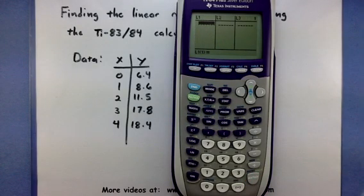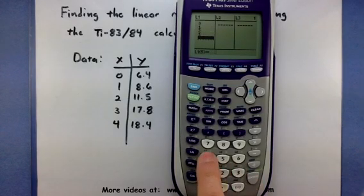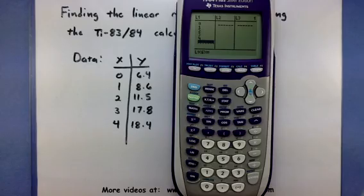Now here's where I can start entering in my values. First we're going to start with this X column. Type in 0, Enter, 1, Enter, 2, Enter, 3, Enter, and 4. There we go.